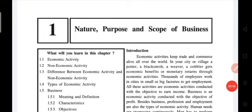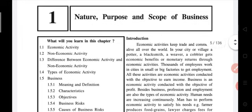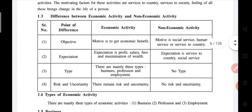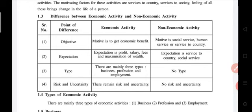Topics studied in lecture number one: economic activity, non-economic activity, and the difference between them. The objective of economic activity is to get economic benefit, while the motive of non-economic activity is social service and human welfare. In economic activities, expectations include profit, salary, fees etc., while in non-economic activities the focus is service to country and society. Types of economic activity include business, profession, and employment. Economic activity involves risk and uncertainty; non-economic activity does not.